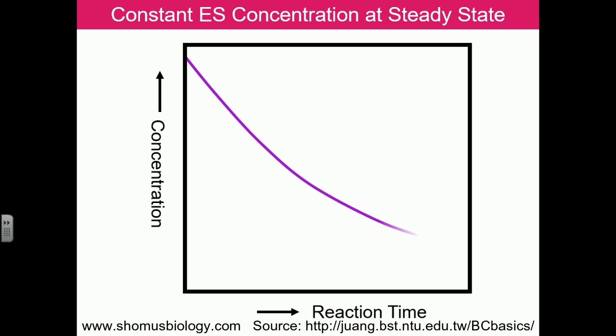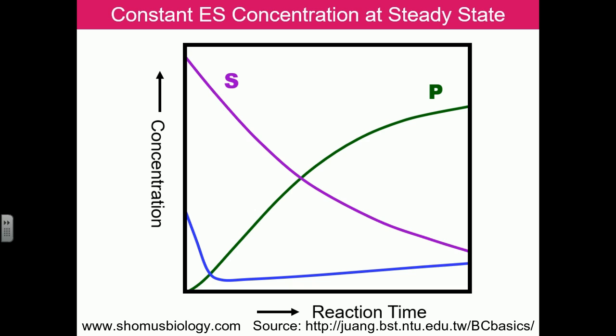The substrate concentration falls considerably because substrates are being utilized as the reaction proceeds. Product concentration rises because new products are formed from the substrate via the enzyme. The free enzyme concentration (capital E) shows a slight fall at the beginning because enzymes are now linking with substrate to form enzyme-substrate complex.